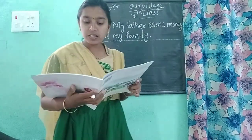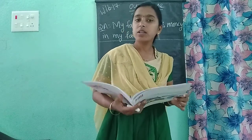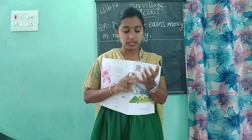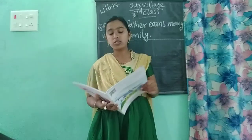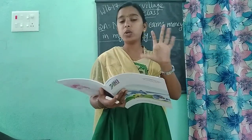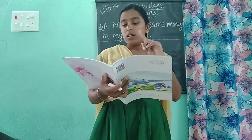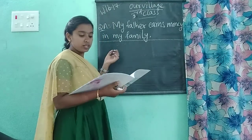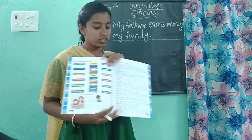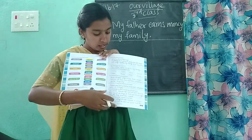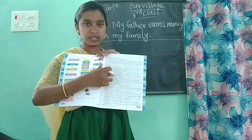Next, coming to the third question: mention the different occupations that you are aware of. Already we had learned so many occupations in this 'Our Village' lesson. You have to write a few occupations here — like teacher, doctor, carpenter, and others. How many do we have to write? Total 8 boxes. In those 8 boxes we have to write 8 occupations. If you don't remember all the occupations, see page number 16 — in the middle, all those are occupations. Any of these 8 you can write here.